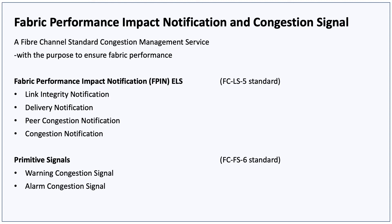Defined in the Fibre Channel LS5 Standard, there are four categories of notifications: Link Integrity Notification, Delivery Notification, Peer Congestion Notification, and Congestion Notification. Upon devices performing fabric login, the fabric will advertise that it can provide FPINs to the device's HBAs, and they can subscribe to notifications.